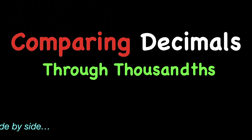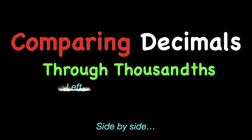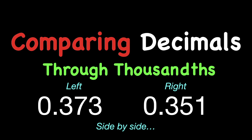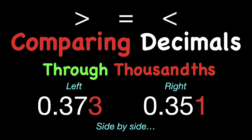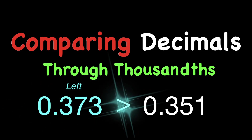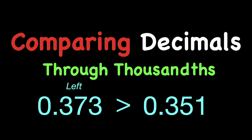Comparing for this lesson means we're going to take two numbers and put them side by side — one on the left side, one on the right side. For example, 373 thousandths is a decimal number through thousandths on the left compared with 351 thousandths on the right. In this case, 373 thousandths is greater than 351 thousandths.